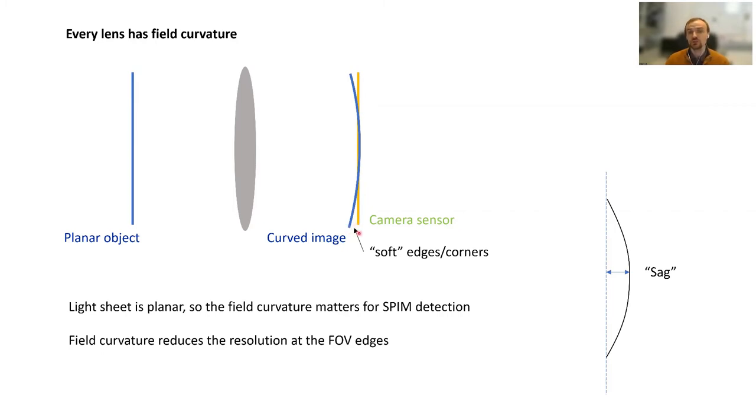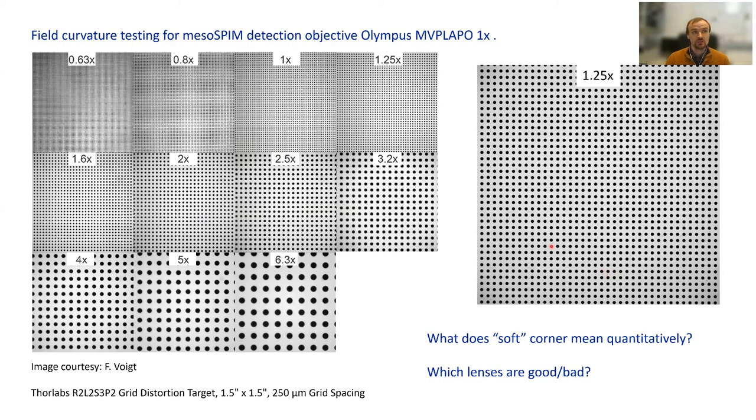One term from optics I introduce here is sag, which basically is the amplitude of this curvature across the field of view. We can test field curvature with the existing objective that mesoSPIM microscopes use, this 1x Olympus objective, at different zooms. You can put a distortion target from Thorlabs and you see, for example here at 2x, that the center is sharper and the sides are blurry. But how do we quantify this? How do we put a number on what field curvature we have? Is it good or bad for imaging?